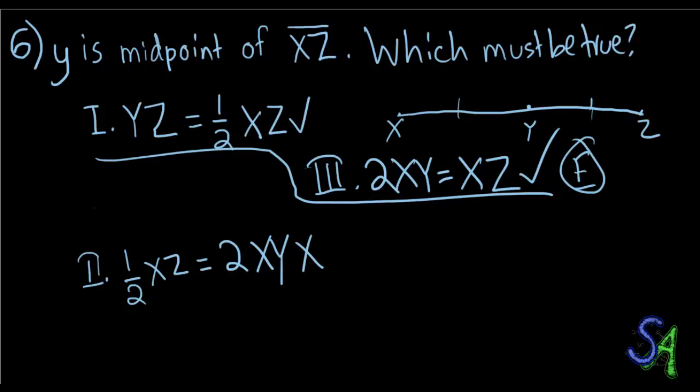Moving on to number 7, which is on the next page. Give me a sec. Yeah, now the logo is suddenly going to be on the top. Number 7. If 2R is equal to 5S and 5S is equal to 6T, what is R equal in terms of T?